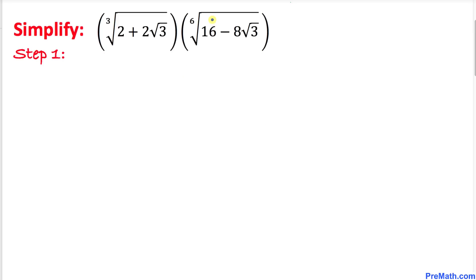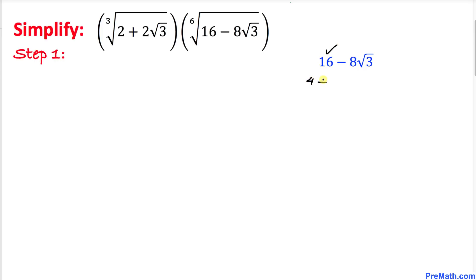Let's focus on this radicand — the part inside this radical. I have copied it down and now we are going to manipulate it so that we can convert this into a perfect square. Let's focus on this 16. 16 could be written as 4 plus 12, and then minus 8 times square root of 3. Now let's focus on this 12 and manipulate this number. 12 could be written as square root of 12, then squared.